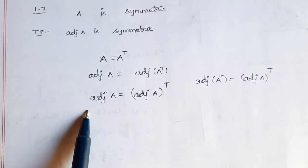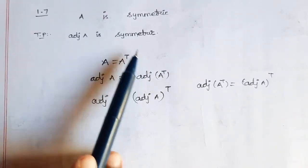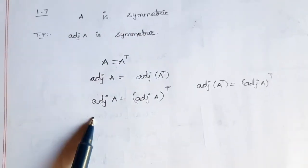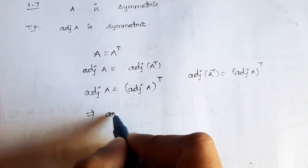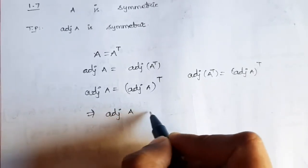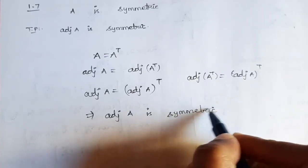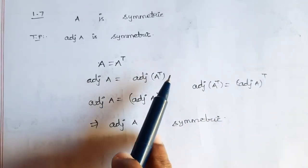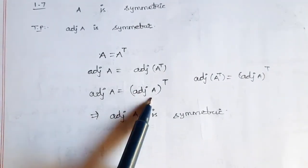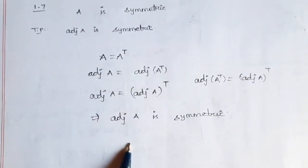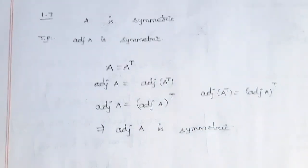So we get adjoint A is equal to adjoint A transpose, the whole transpose. Since A is equal to A transpose and A is symmetric, adjoint A is equal to adjoint A transpose. Therefore, adjoint A is symmetric. Hence proved.